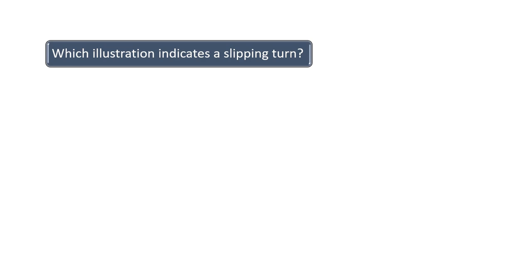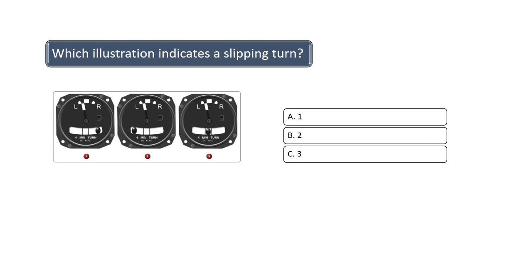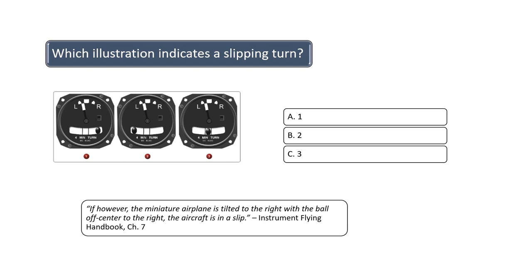Which illustration indicates a slipping turn? According to the Instrument Flying Handbook, when the aircraft is in a turn and the ball is on the same side as the wing-low side, the aircraft is in a slip. Conversely, when the ball is on the opposite side of the wing-low side, then the aircraft is in a skid. Image 1 represents a skid and image 2 shows a slip. Since the question is asking what figure represents a slip, the correct answer is B, figure 2.